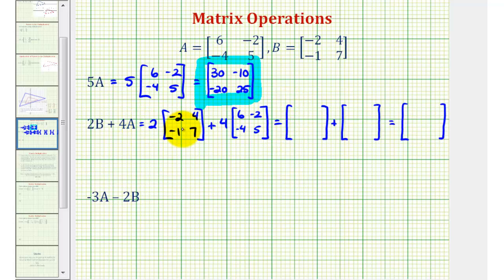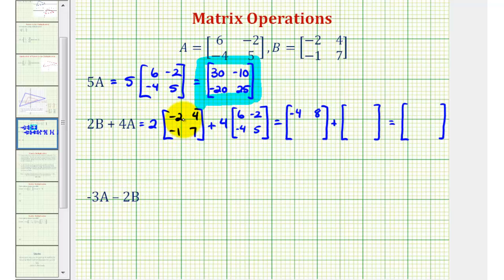For two times matrix B, we'll multiply each element of matrix B by positive two. Two times negative two is negative four. Two times four is eight. Two times negative one is negative two. Two times seven is 14.